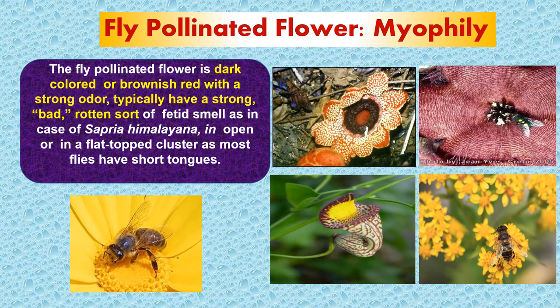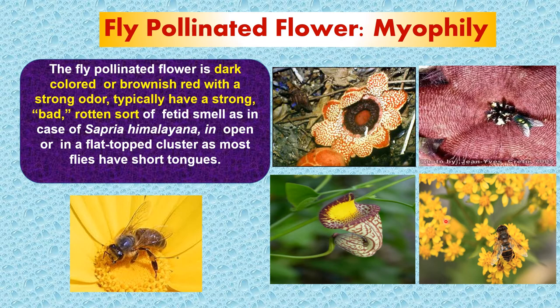Fly-pollinated flowers (myophily) are dark or brownish-red in color with a strong odor. For example, Sapria himalayana exudes a strong fetid smell detectable from a meter away — if such a smell is encountered, it indicates the plant is in flower. These flowers grow in open or flat-topped clusters, as most flies have short tongues. Moth-pollinated flowers are mostly white or pale in color so they are visible on a moonlit night. They use strong sweet perfume exuded only at night to advertise their presence in the darkness, so moths visit them during nighttime.